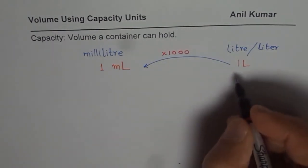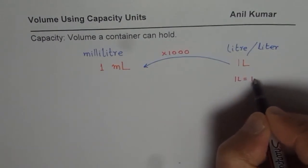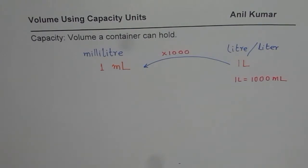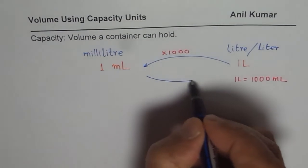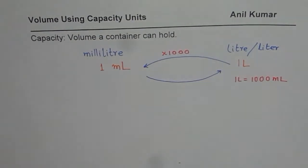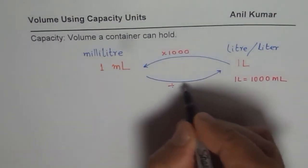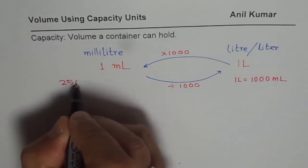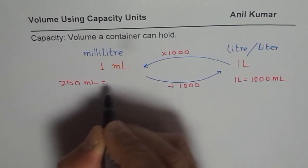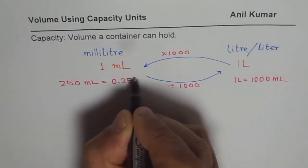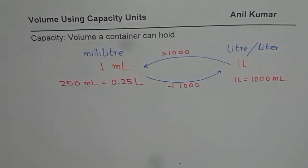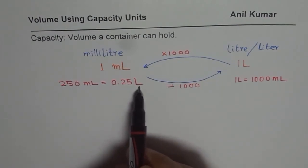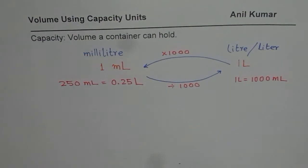That is how you convert. If we are converting from milliliters to liters, then we divide by thousand to get from milliliters to liters. So if I say 250 milliliters, then 250 milliliters is 0.25 liters. What you do is divide 250 by thousand to get the conversion to liters. That is the kind of conversion.